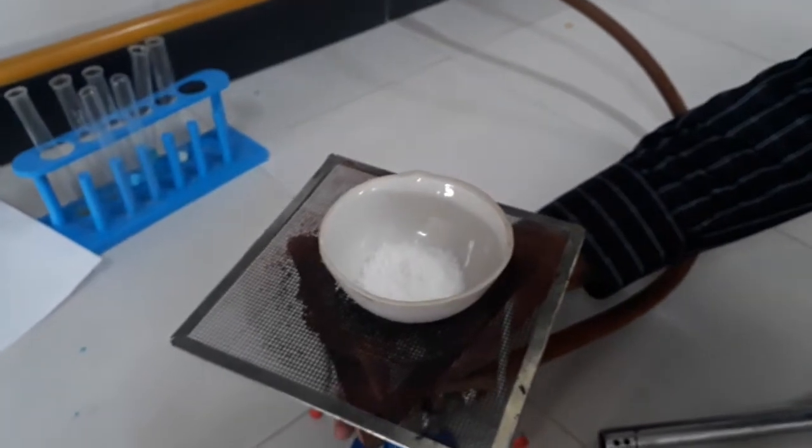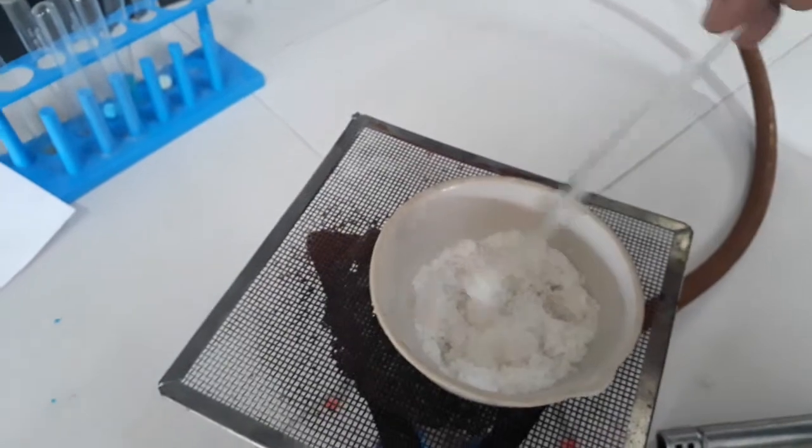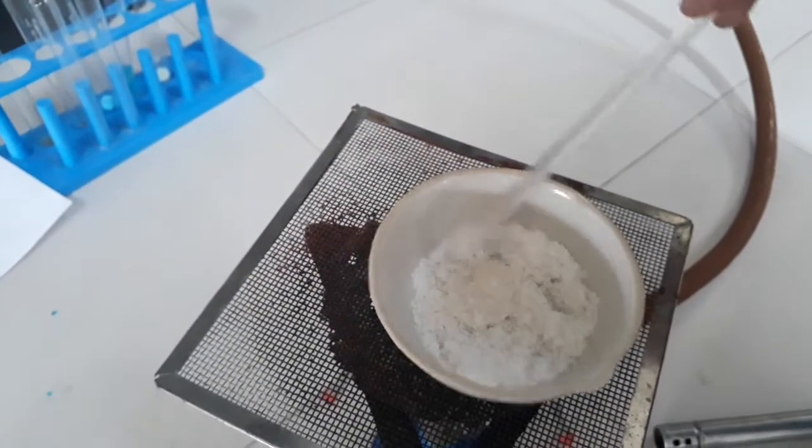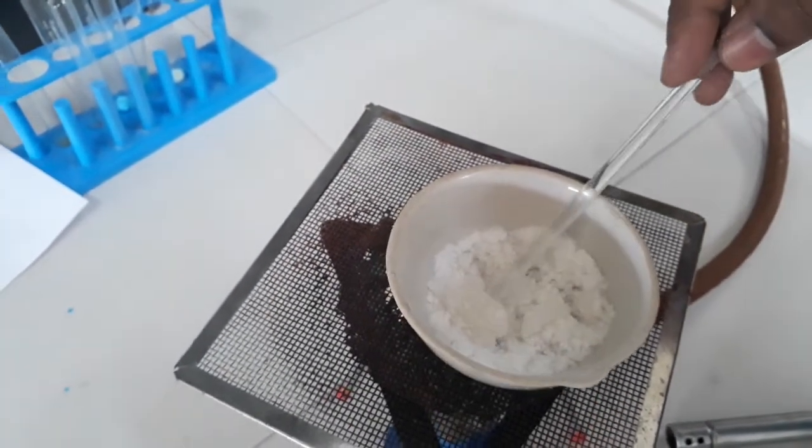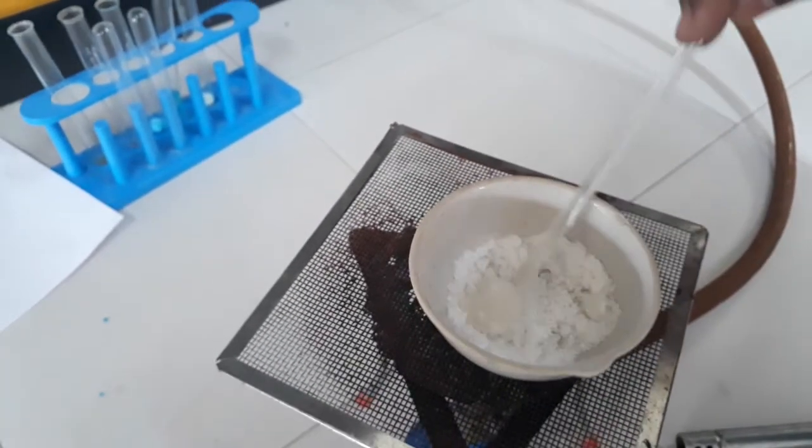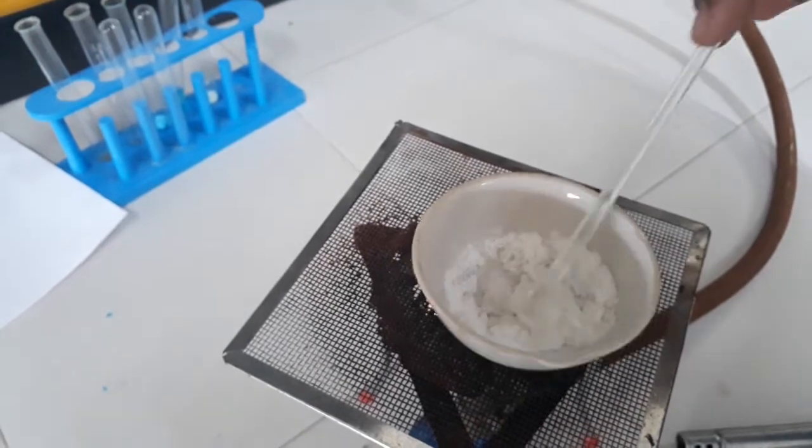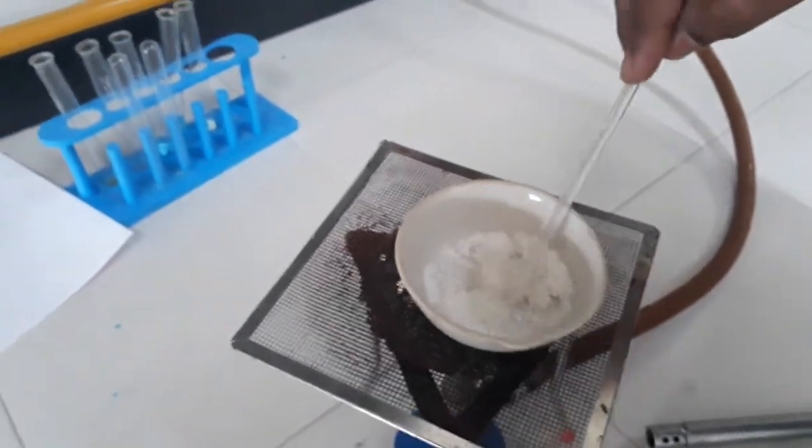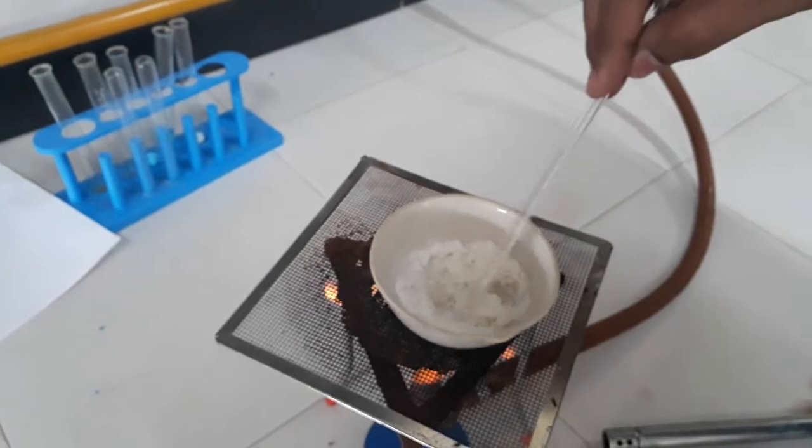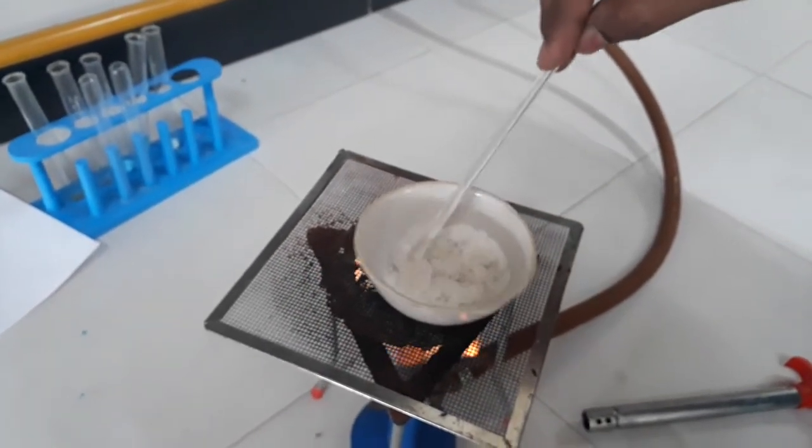Here you can see the melting process or water of crystallization has started to form. You can see puffed alum is formed. Puffed alum means swollen alum. When alum is containing water of crystallization, its volume will increase and that is known as puffed alum. During the heating process you can see due to water it has started to melt.